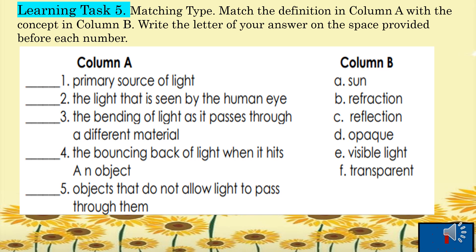Here are the answers for learning task five: number one, primary source of light — letter A, sun; number two, the light seen by the human eye — letter E, visible light; number three, the bending of light as it passes through a different material — letter B, refraction; number four, the bouncing back of light when it hits an object — letter C, reflection; number five, objects that do not allow light to pass through them — letter D, opaque.